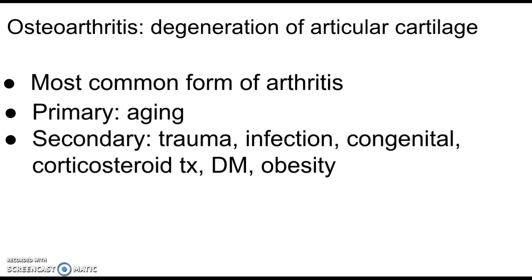Osteoarthritis generally affects joints that are under pressure: spine, fingers, knees, hips, and shoulders. The most common source of major disability is osteoarthritis of the knee. One reason I like to start med-surg with connective tissue disorders is that many clinical sites — especially rehabs — see a lot of knee replacements, hip replacements, and rheumatoid or osteoarthritis patients, so this is a great place to begin med-surg one.